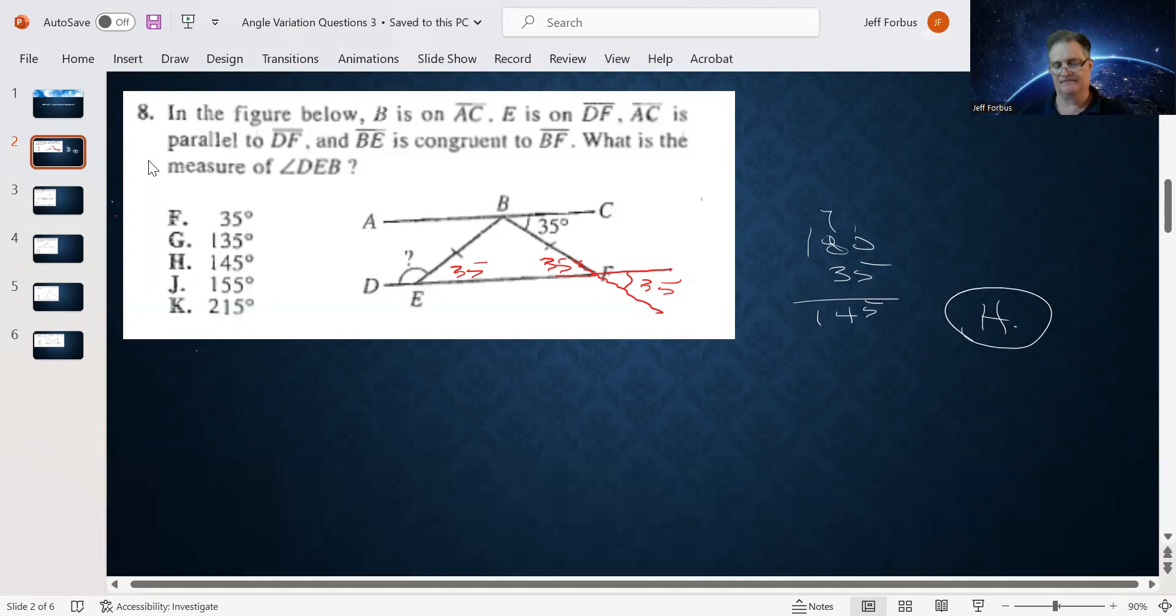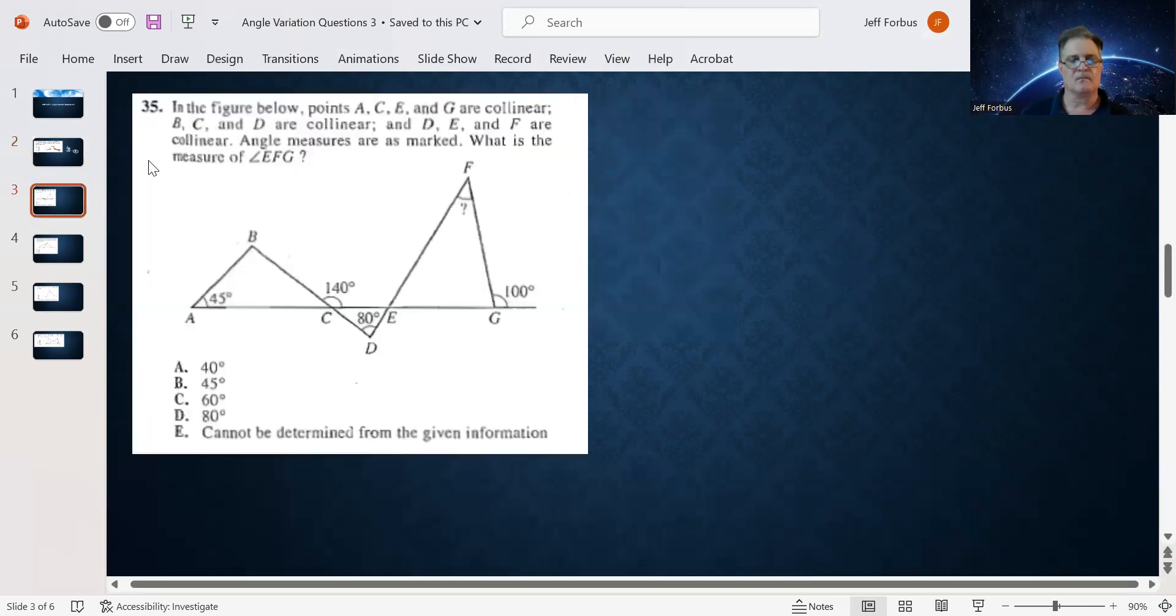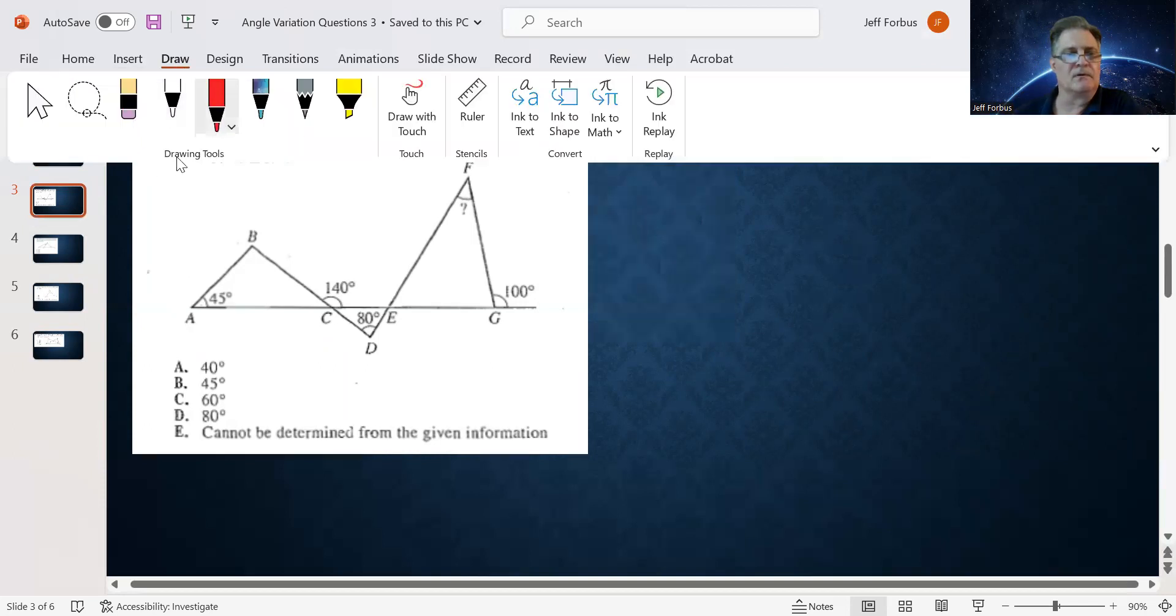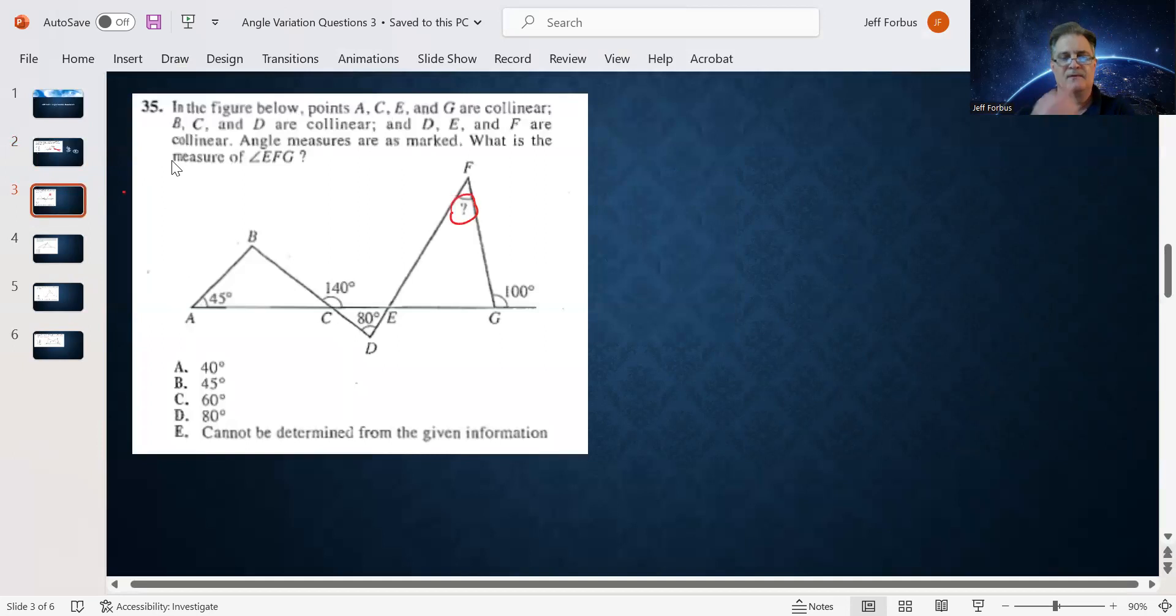Next question. The question really says, what is the measure of angle EFG? So we want angle F up here at the top. That's what we're looking for. If we knew the angles E and G of triangle EFG, then it would help us get to angle F.